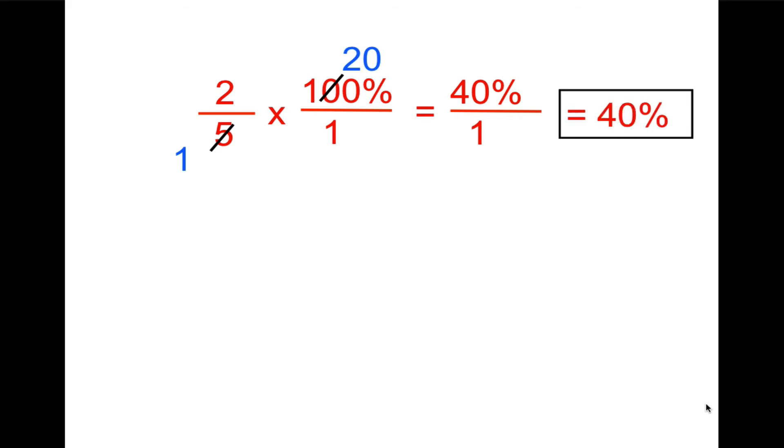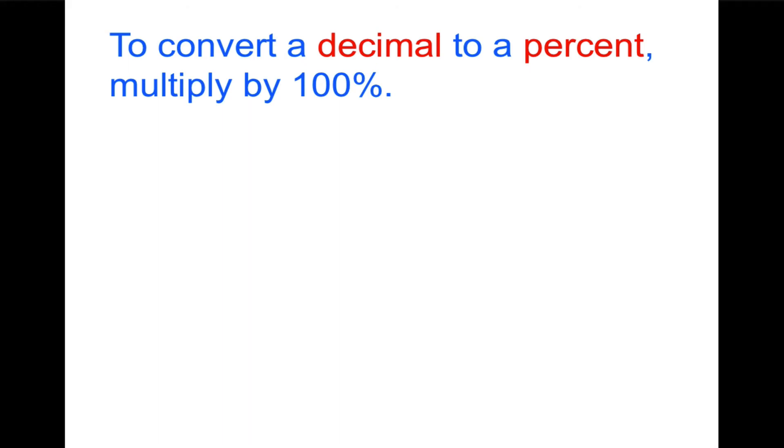To convert a decimal to a percent, multiply by 100%. Here's three quick examples. 0.125 times 100%. When you multiply any number by 100, it moves the decimal two places to the right. Our answer is going to be 12.5, and we keep the percent sign.